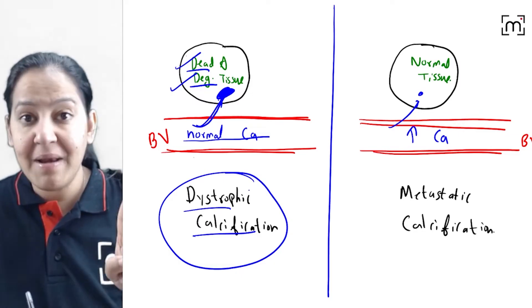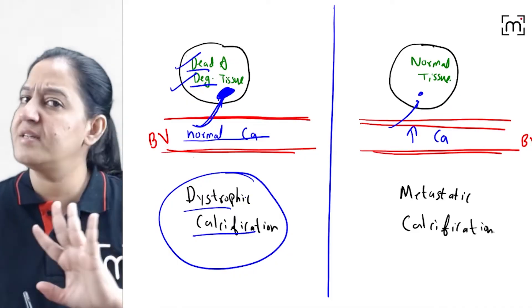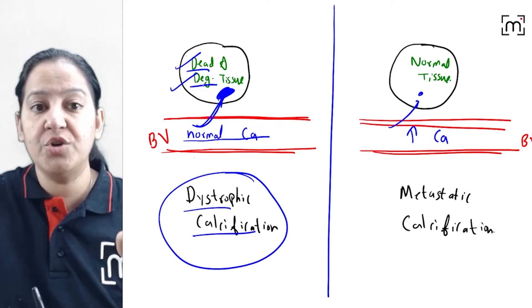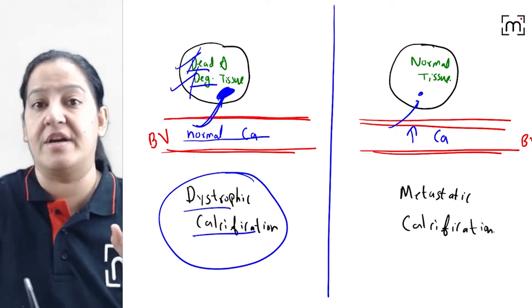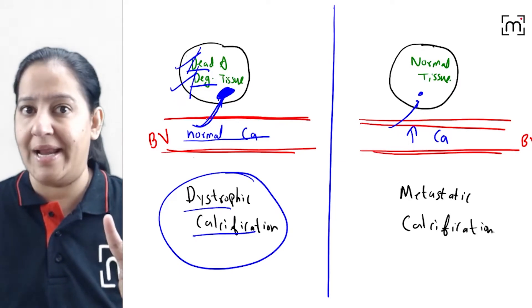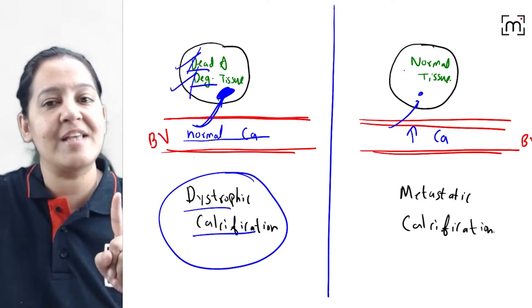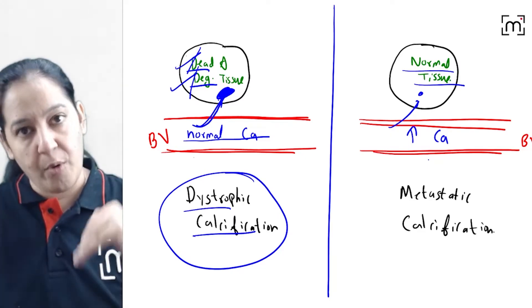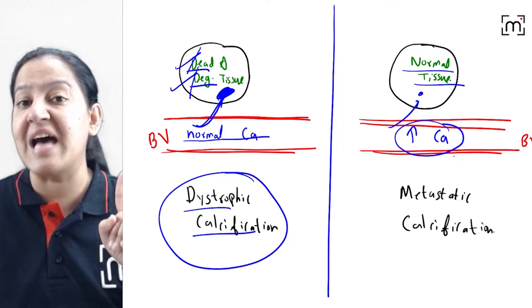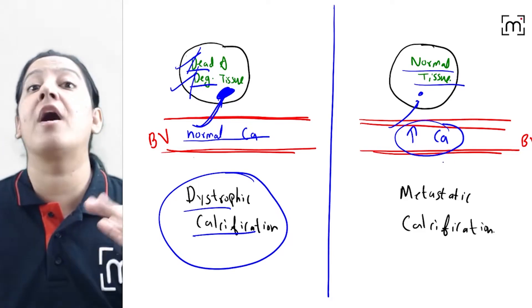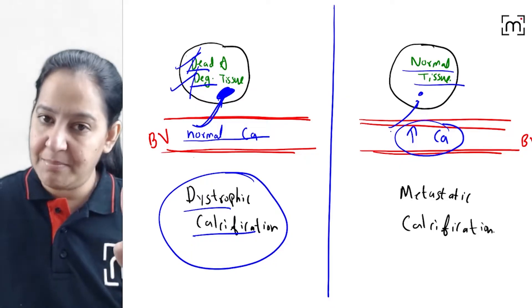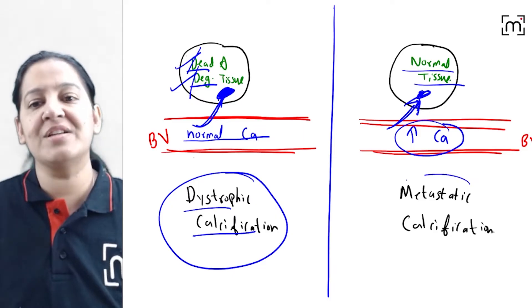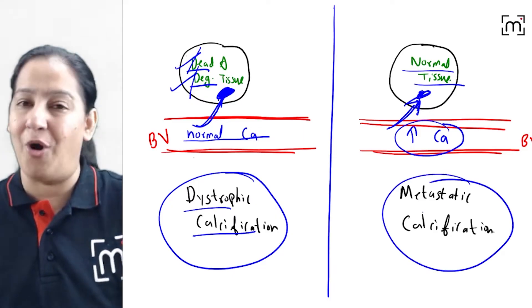In dystrophic calcification, the calcium metabolism is normal, but the problem is in the tissue — the tissue is either dead or degenerated. In the second diagram, the tissue is absolutely normal and healthy; there is no problem with the tissue. But the problem is in the calcium level in the blood: there is hypercalcemia. The calcium levels in the blood are more than normal, and the calcium leaves the blood and gets deposited in the tissue. Such calcification is known as metastatic calcification.